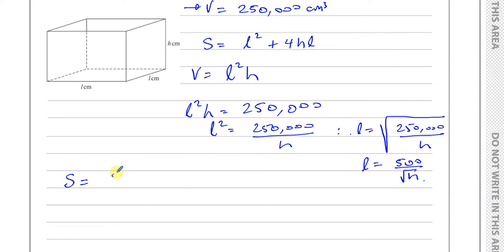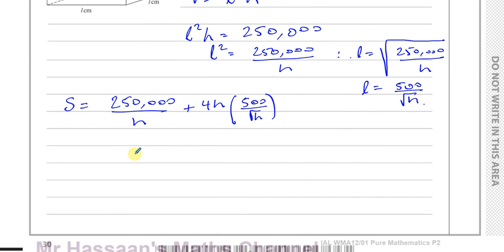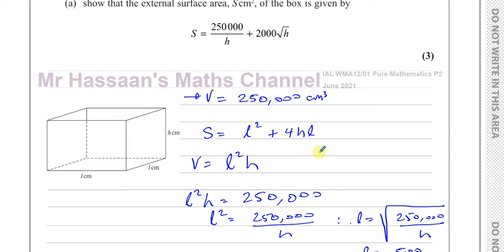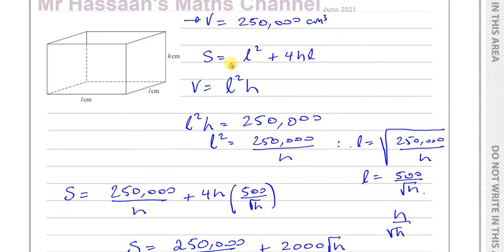Now we take our expression for S and replace L squared with 250,000 over H, and replace L with 500 over the square root of H. That gives 250,000 divided by H, plus 4 times H times 500 over root H. That simplifies to 250,000 over H plus 2,000 times the square root of H — and that's exactly the answer for part A.